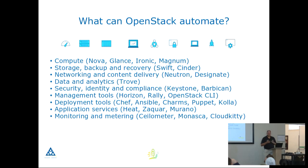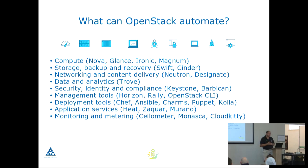Security and identity have always been part of this. Keystone is the authentication method used inside OpenStack between services. You can back-end that onto any LDAP-capable directory or something like Microsoft Active Directory. Barbican is an authentication key management platform — fairly new, starting to gain some traction. And then the management tools: Horizon is the dashboard interface, Rally does testing to make sure things work as they should, and of course all the OpenStack CLI tools.